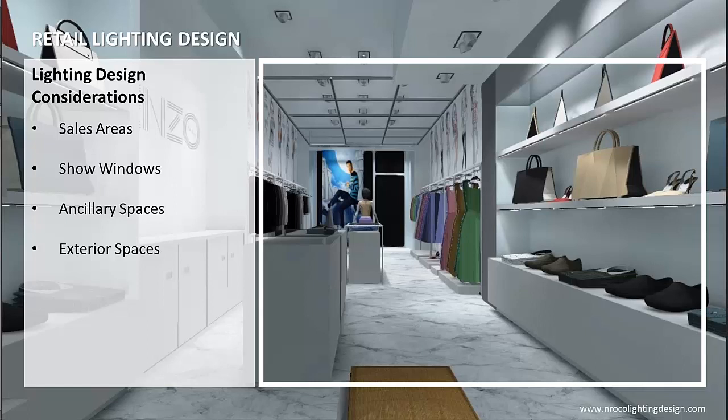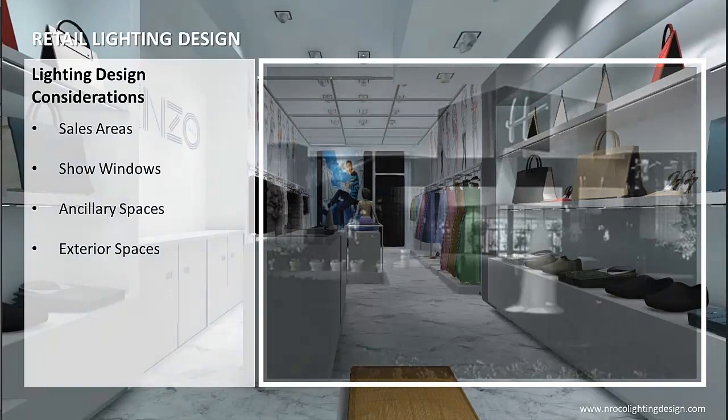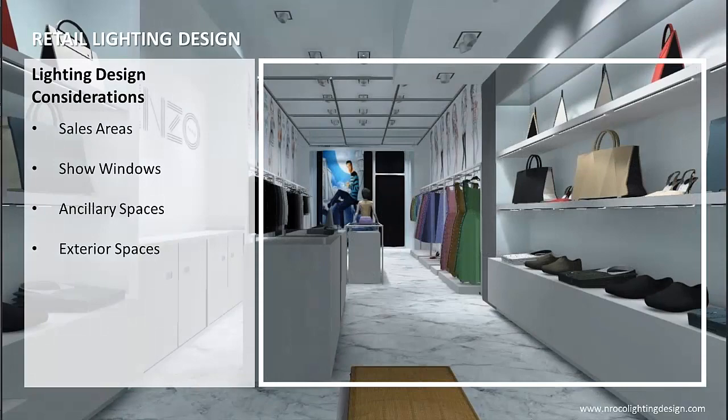Lighting requirements differ as the functional requirements of the space change. Identifying typical types of spaces within a retail environment, along with their functional requirements, helps to define the lighting design problem. There are four types of spaces that define a retail environment: sales areas, show windows, ancillary spaces, and exterior spaces. The lighting design solution unfolds when illuminance levels are defined, luminaires are selected, and lighting control strategies are generated.